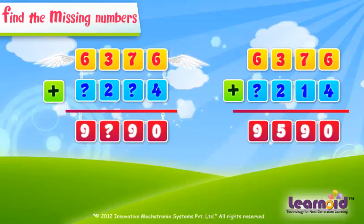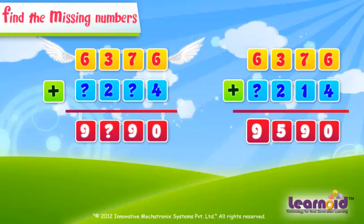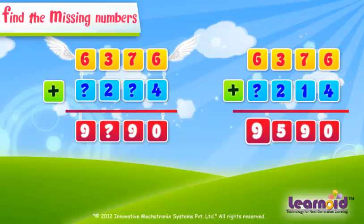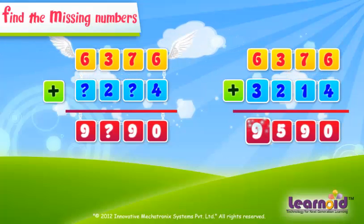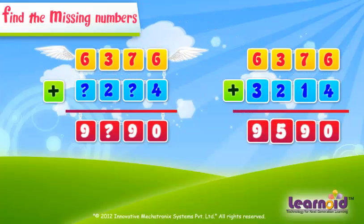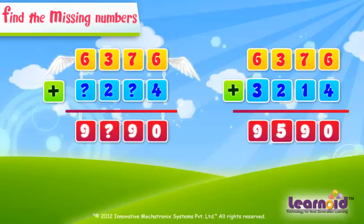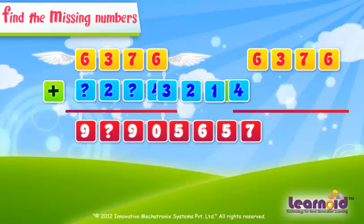And in the 1000's column, to get 9, we have to add 3. The missing digits will be 3, 5, and 1.